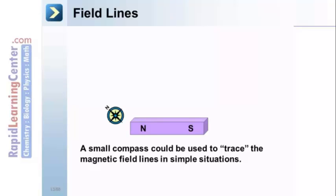Here's a magnet. Put a compass near one pole, and make a point, a pencil point, where the north end of the compass points. Then move the compass again, and so forth, and so on.